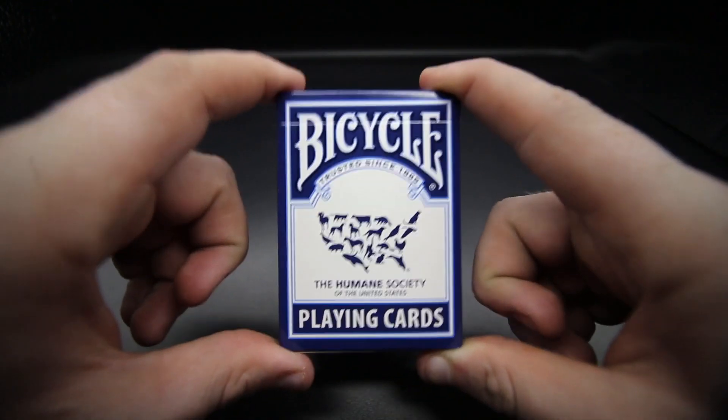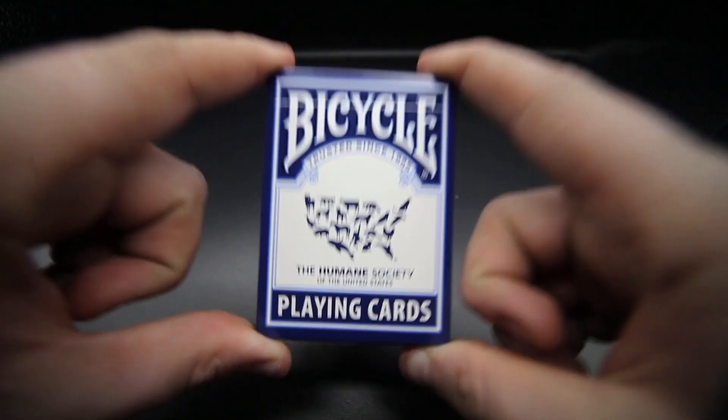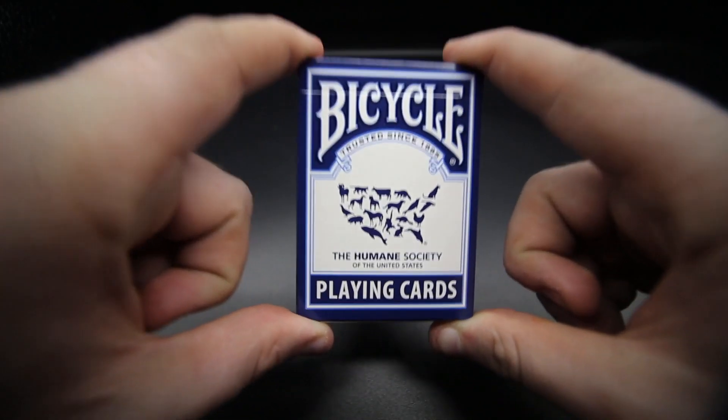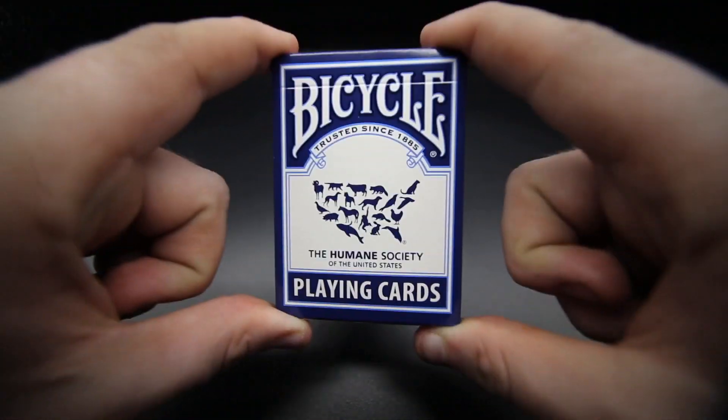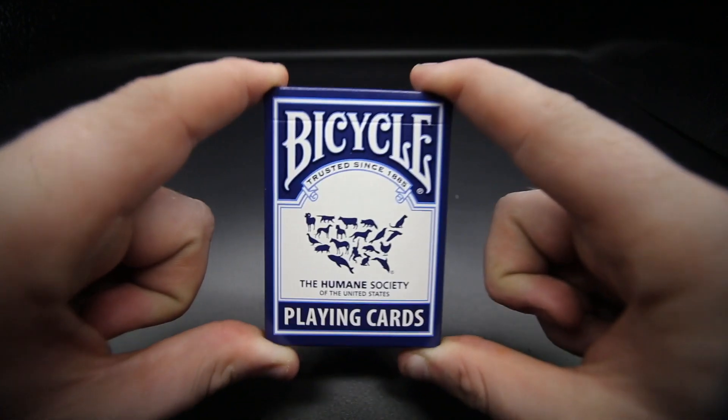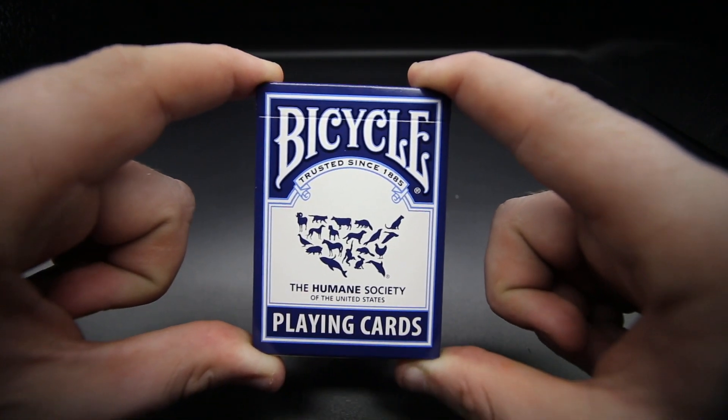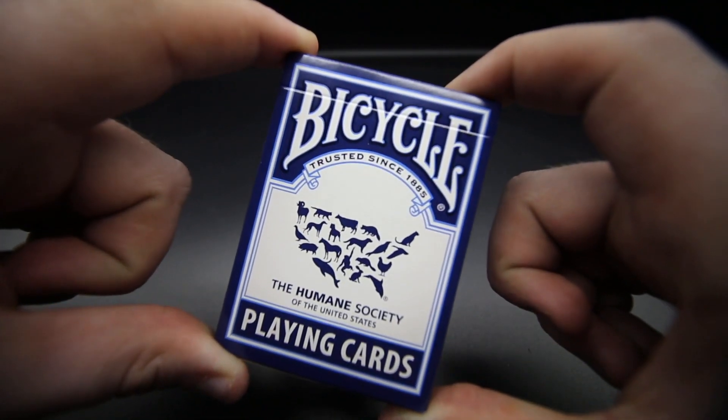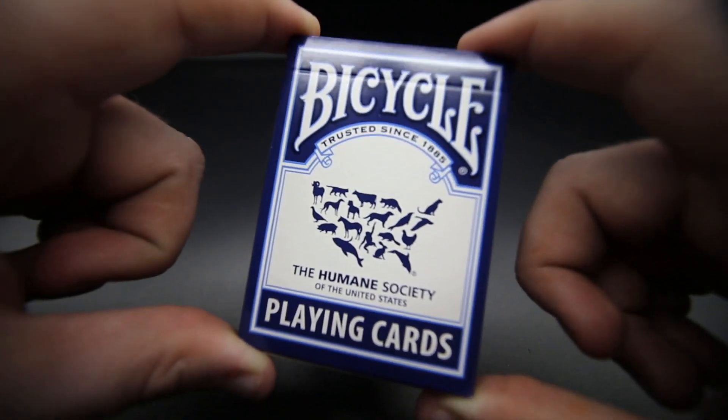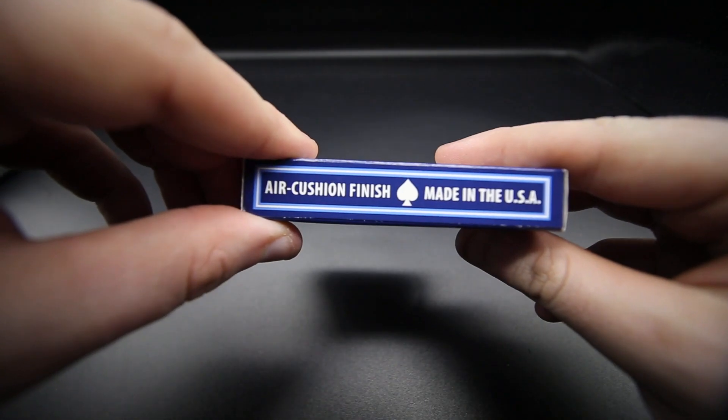So I have to review it. I apologize if you've already seen this review done before, it's just this is a really good cause and I want to review it. On the front it has Bicycle, trusted since 1885, playing cards with the actual design there of all the different animals. It has air cushion finish, made in the USA, and the website there.